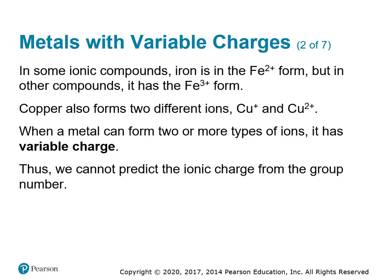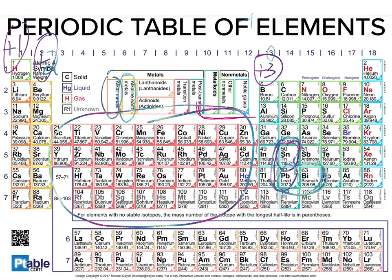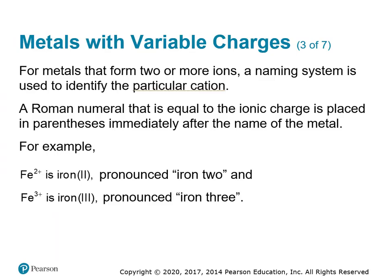Here are some examples. In some ionic compounds, iron is in the form of Fe plus 2, but in others it can form a plus 3 ion. Copper can also form two different ions — plus 1 and plus 2. When a metal can form two or more types of ions, it has what's called a variable charge. We can't predict the ionic charge from the group number if it's a transition metal or one of those special ones — tin, lead, and bismuth.